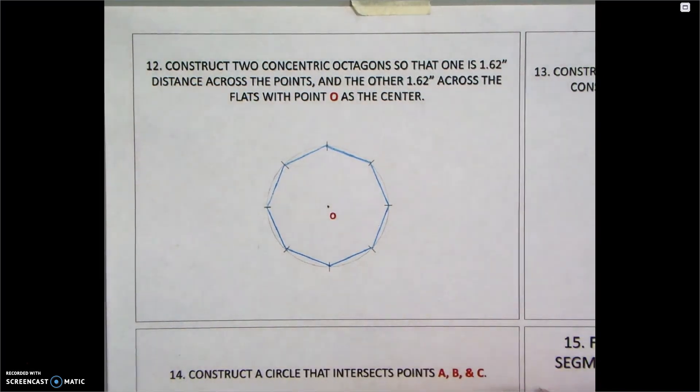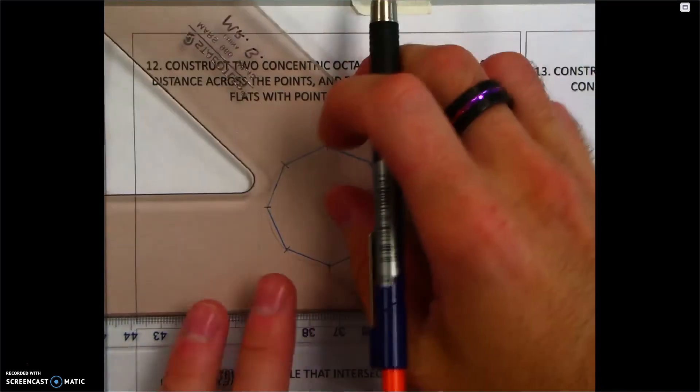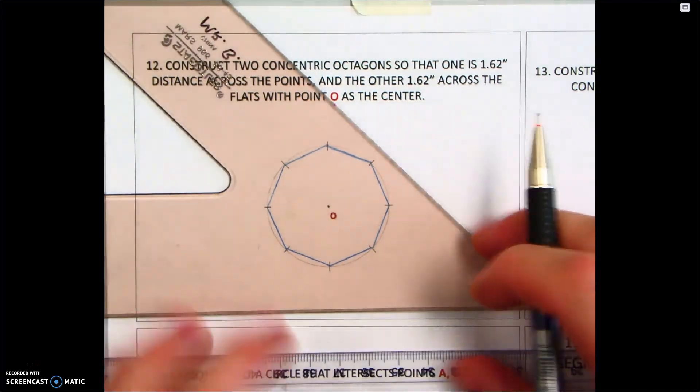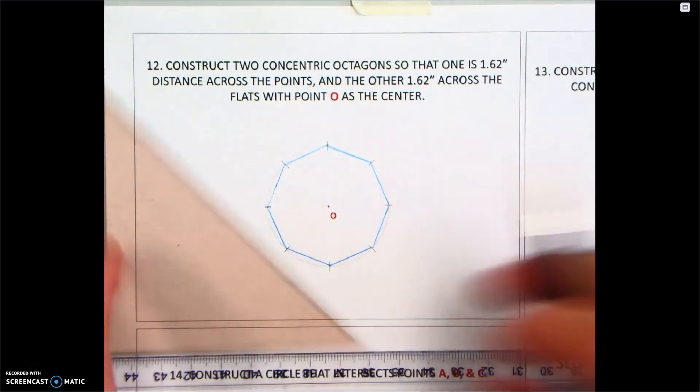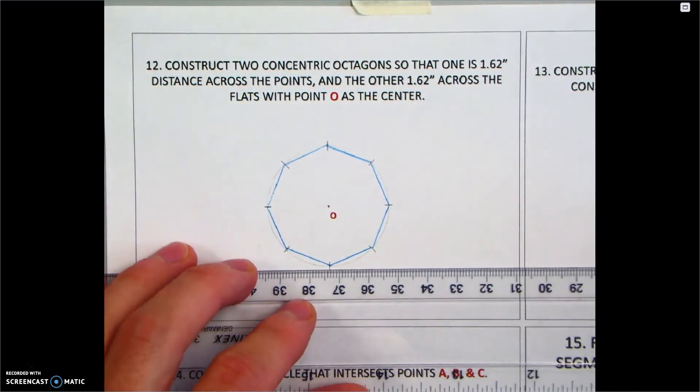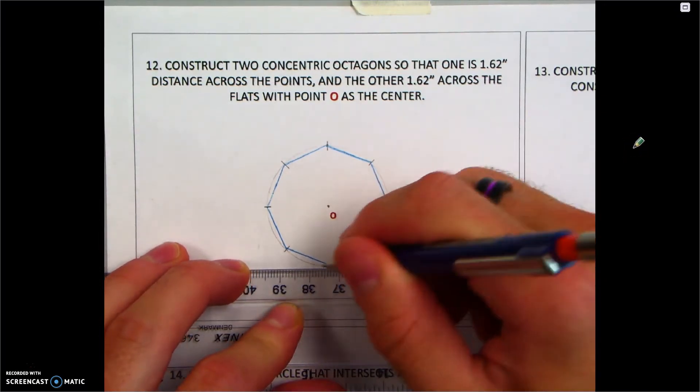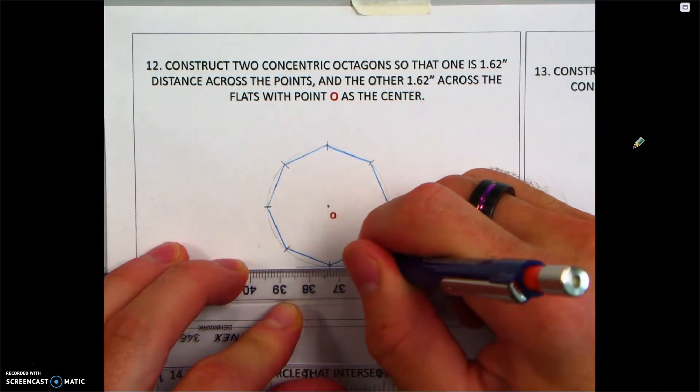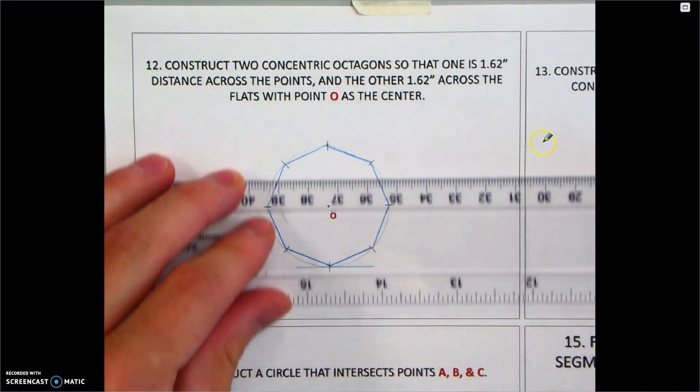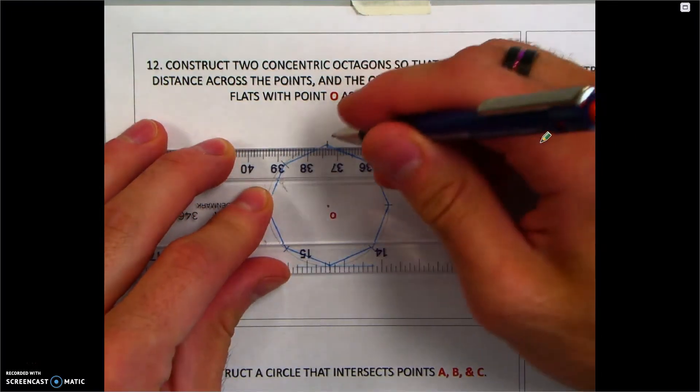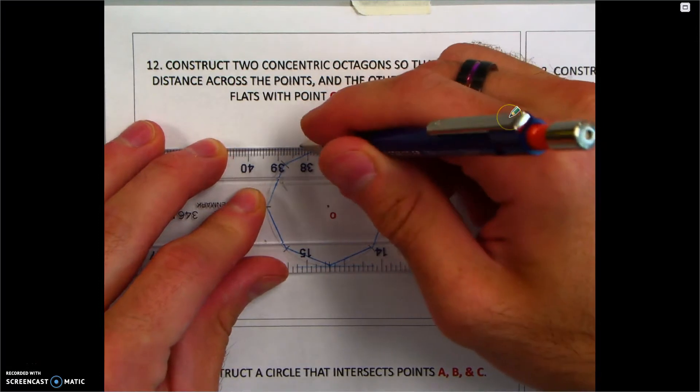The circumscribed octagon is actually a little bit quicker. We don't even need to mark anything. All we need is that same 45-90 triangle. What I'm going to do is start with the T-square and bring it up to the bottom of the circle so it's tangent, and I'm going to make a line. Slide it up to the top of the circle, tangent, make a line.